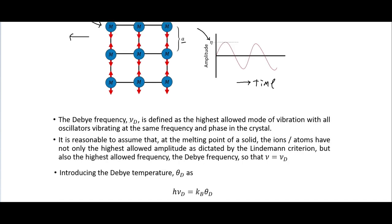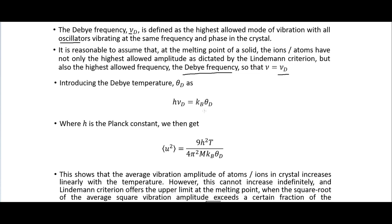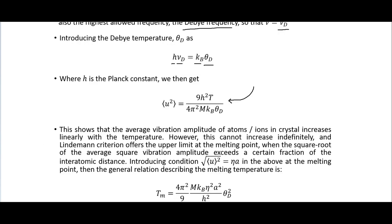The Debye frequency νD is defined as the highest allowed mode of vibration, with all oscillators vibrating at the same frequency and phase in the crystal. At the melting point it is reasonable to assume the ions or atoms have both the highest allowed amplitude (Lindemann criterion) and the highest allowed frequency (the Debye frequency). We introduce the Debye temperature θD = hνD / kB, where h is the Planck constant and kB is the Boltzmann constant.